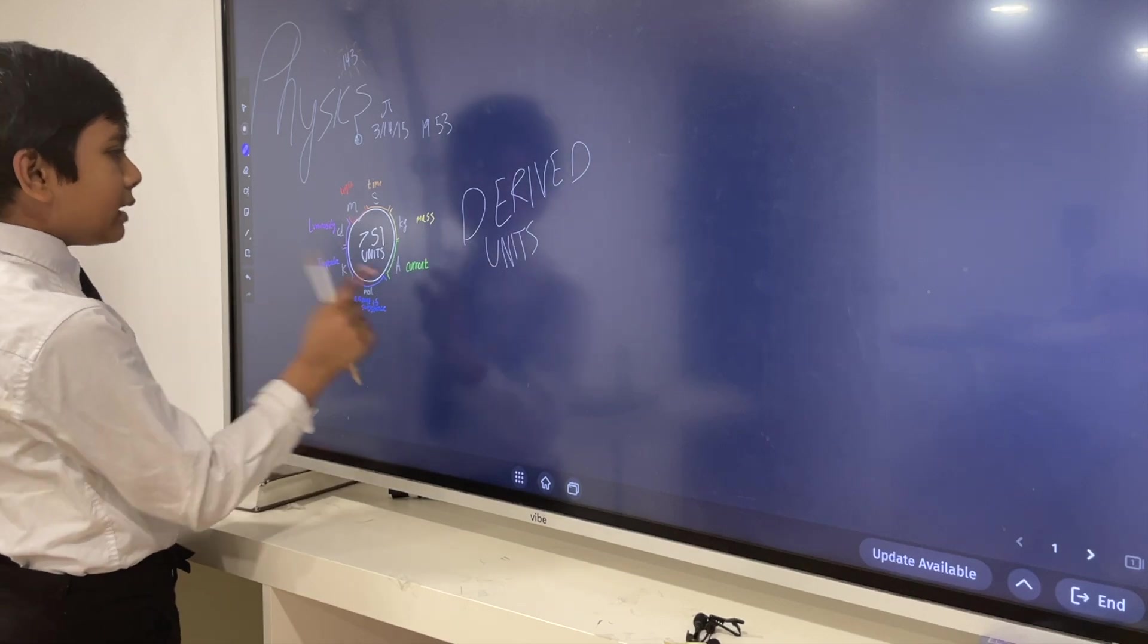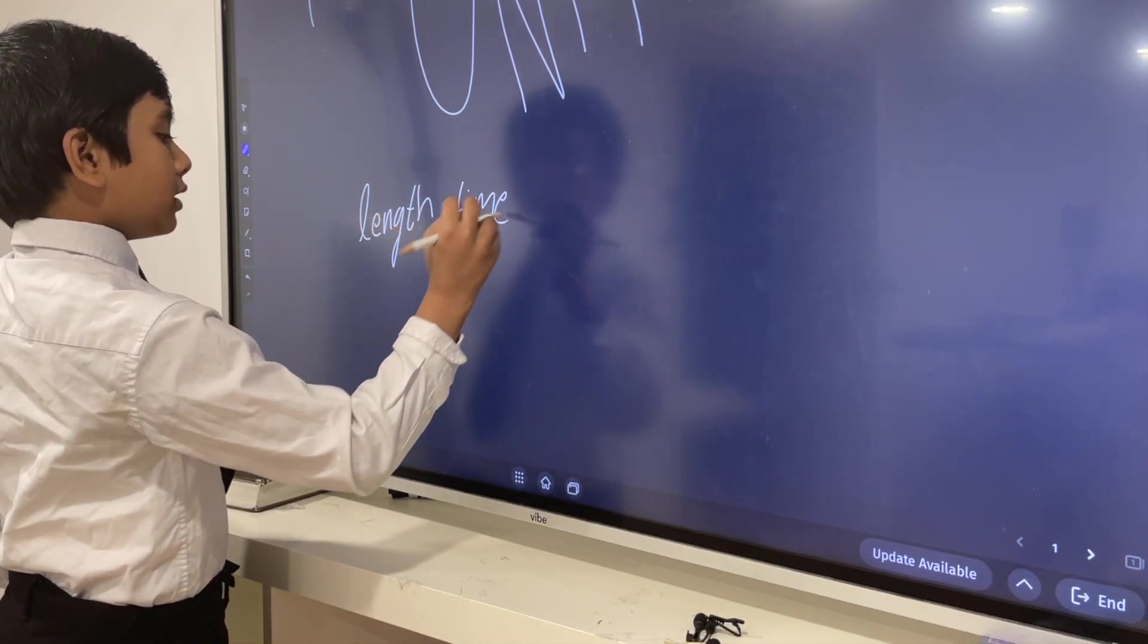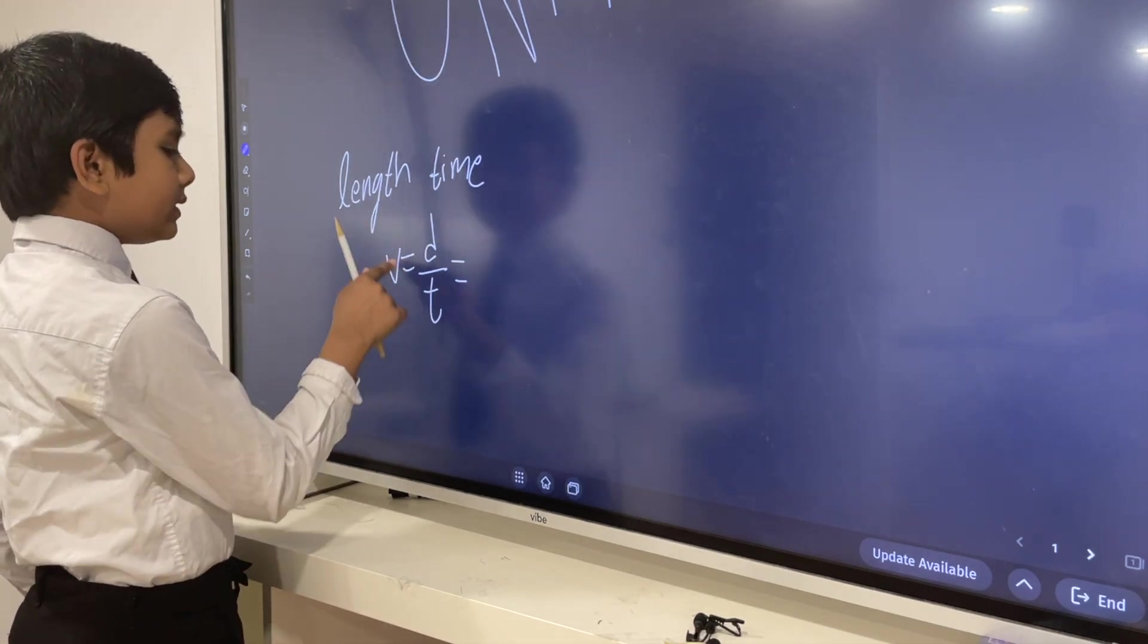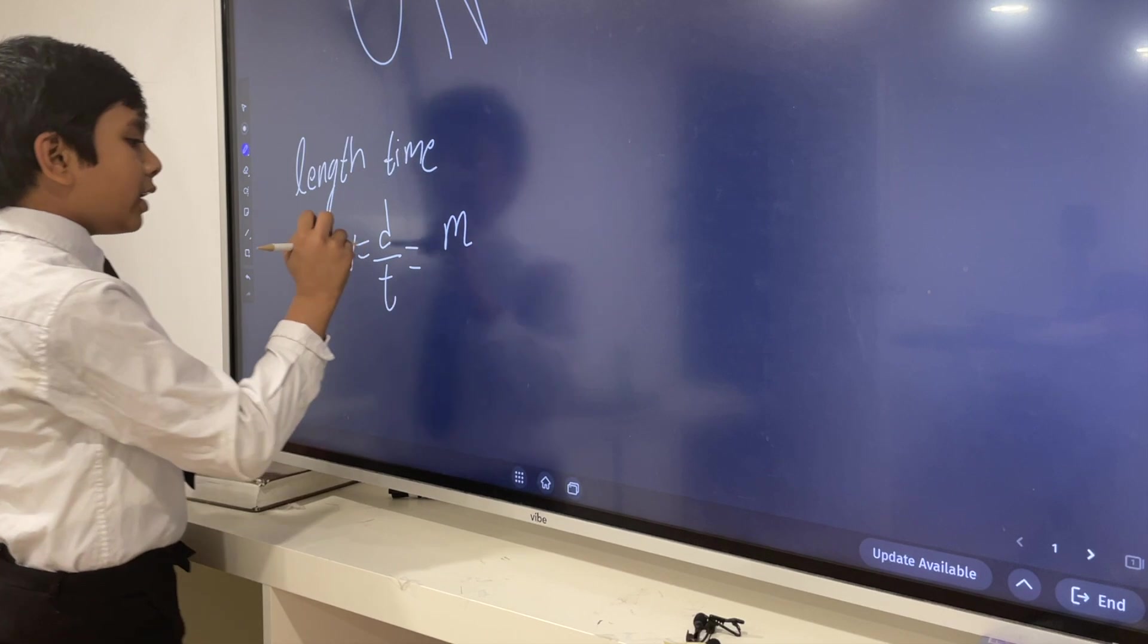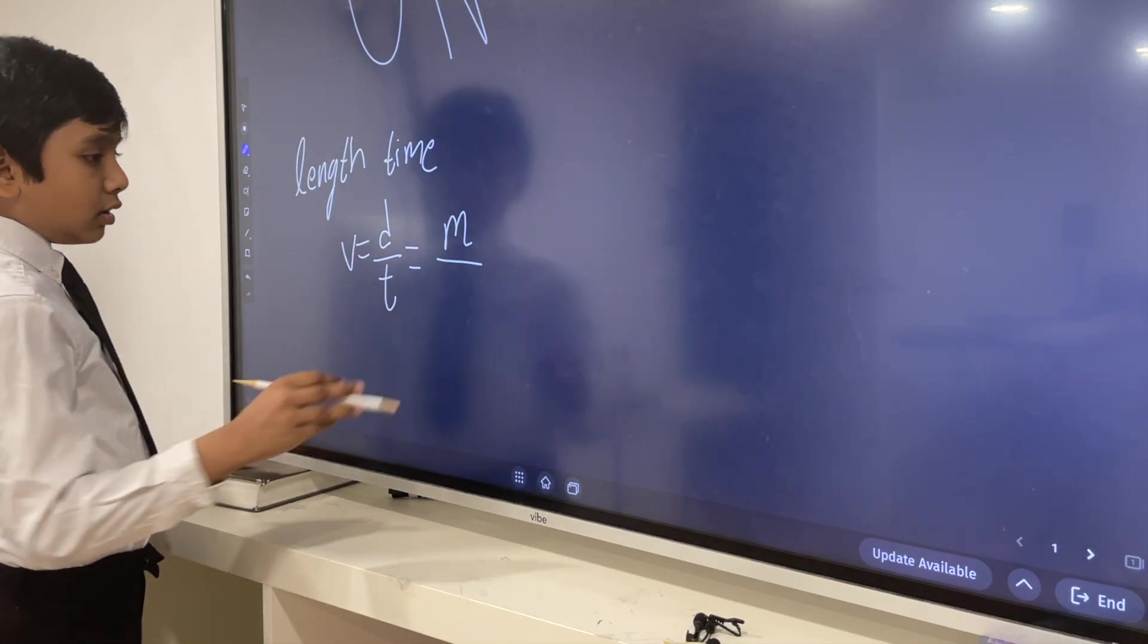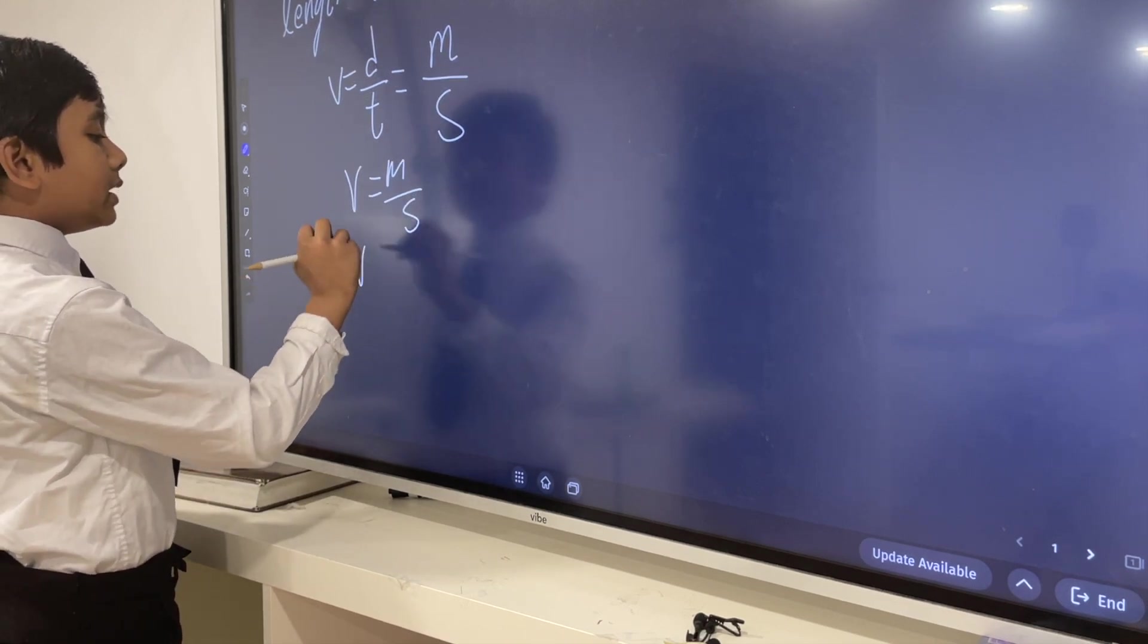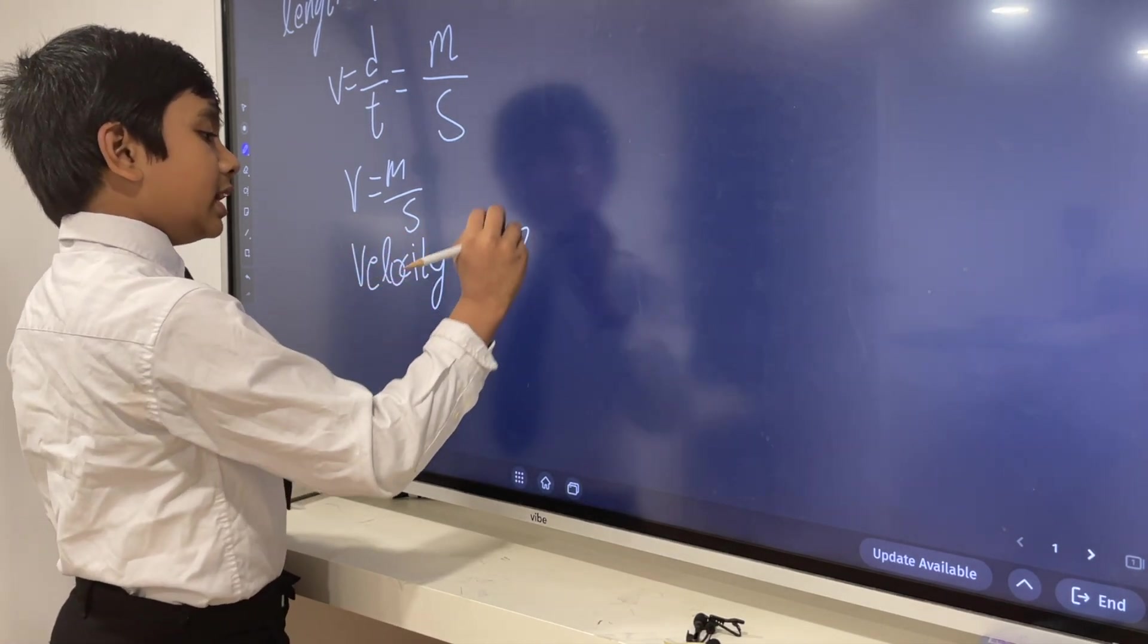So let's say maybe we add length and time, for an example. Now, velocity is distance covered in a specified amount of time. So D would be equal to M, or the unit for distance, or length, would be M, meters, while the unit for T, time, would be S, seconds. So we get V is meters per, or meters over seconds. So that means that the unit for velocity is meters per second.